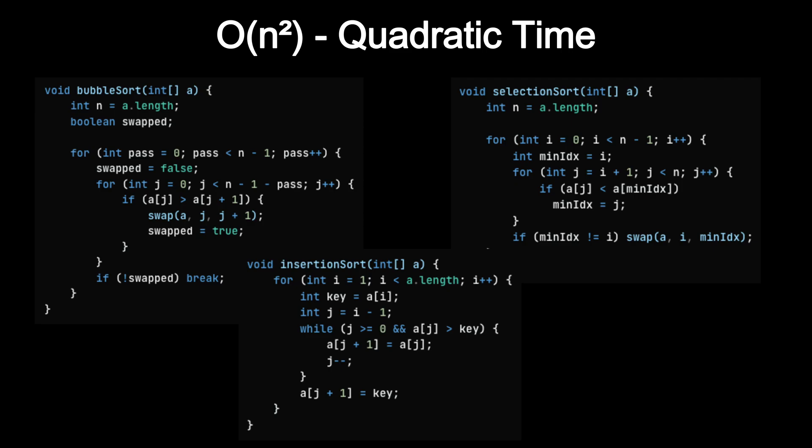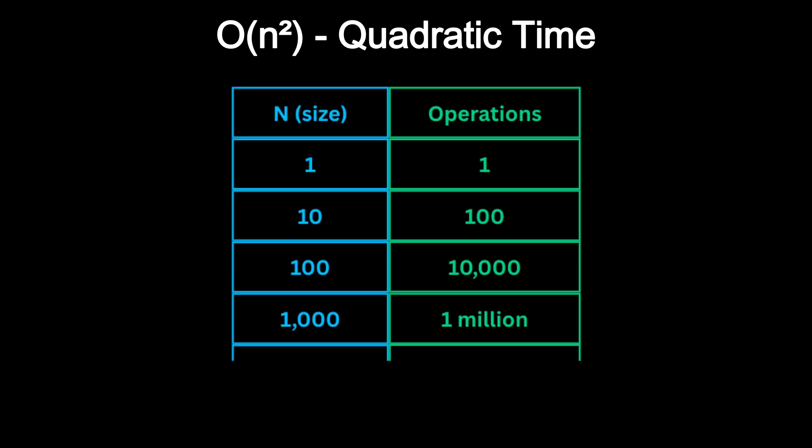These algorithms are fine for small inputs, but they become painfully slow as N grows. For N equals 1000, you are doing around 1 million operations. And if N is 10,000, you are looking at 100 million operations. In coding interviews and wherever performance matters, you will often want to avoid O(n²) and look for ways to bring it down to O(n log n) or better.